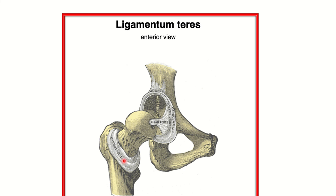Here we can see the femur — the head of the femur, neck of the femur, greater trochanter, lesser trochanter, and the shaft of the femur. We can see a ligament attached to the head of the femur. This ligament is the ligamentum teres femoris, also called the ligament of the head of the femur. Both names are recognized.